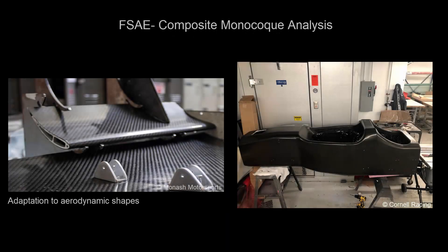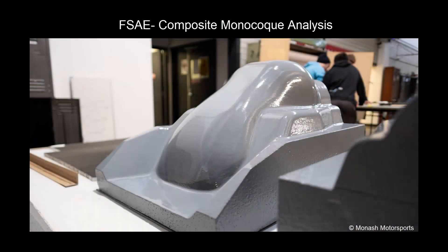Because the carbon fiber is flexible during initial manufacturing, it can be laid into molds quite easily, preserving aerodynamic surfaces and complex features of the structure.